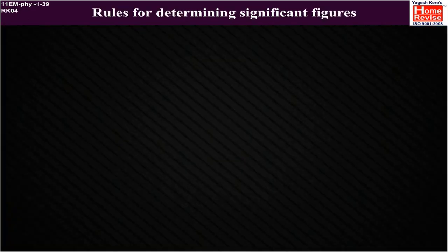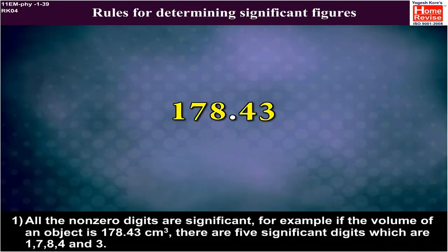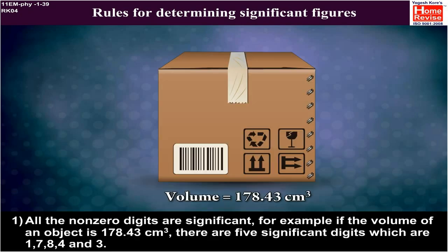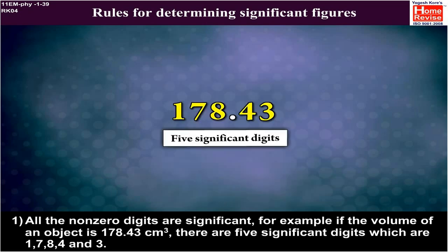Rules for determining significant figures. 1. All the non-zero digits are significant. For example, if the volume of an object is 178.43 cm³, there are five significant digits which are 1, 7, 8, 4 and 3.